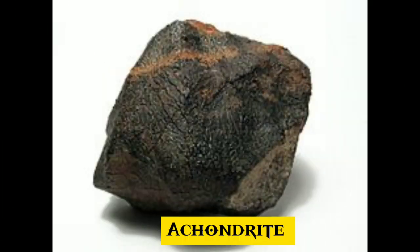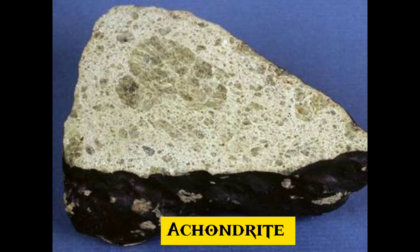8. An achondrite is a stony meteorite that does not contain chondrules. It consists of material similar to terrestrial basalts or plutonic rocks and has been differentiated and reprocessed to a lesser or greater degree due to melting and recrystallization on or within meteorite parent bodies.